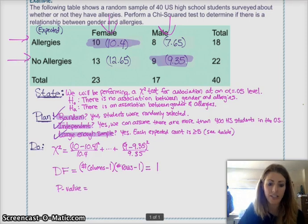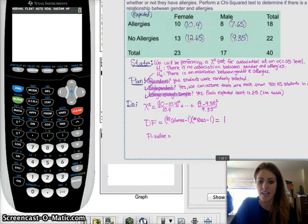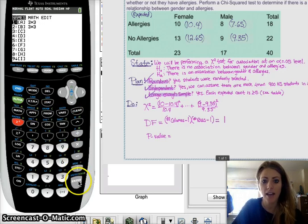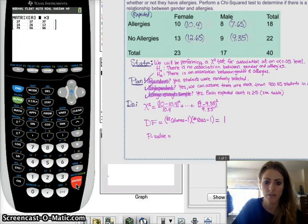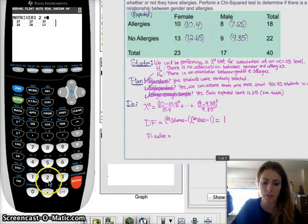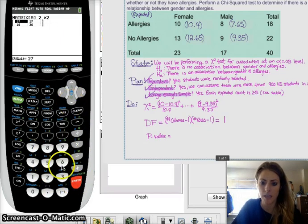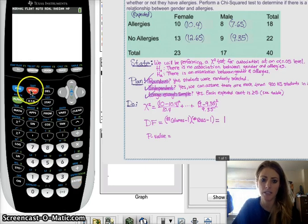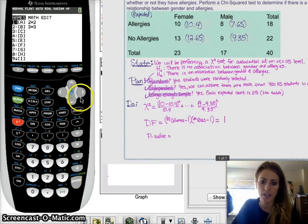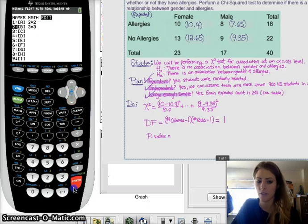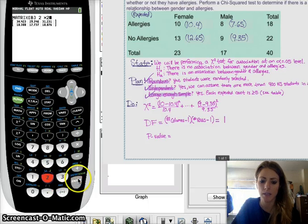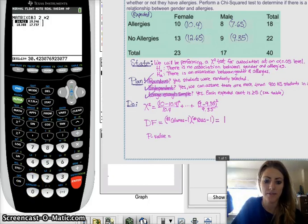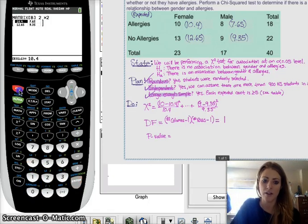So, now I'm going to do everything else in my calculator, which is super exciting. I'm going to have to enter everything into a matrix, into two different matrices. So, I go second matrix, and in A, I want to edit it, and I want a 2 by 2 matrix. And I'm going to put all of my observed values in this one. So, that's going to be 10, 8, 13, and 9. And then, I'm going to do the same thing for the second matrix, and this is with my expected values. So, I go to second matrix, and I want to edit matrix B. I want to make it a 2 by 2. And I'm going to put my expected values in, which are 10.4, 7.65, 12.65, and 9.35. All right, so all my data is in matrix B. And so, now all I have to do is the test.